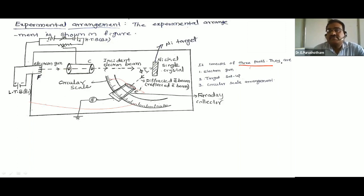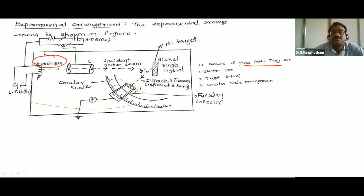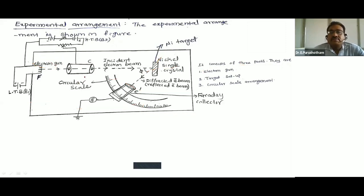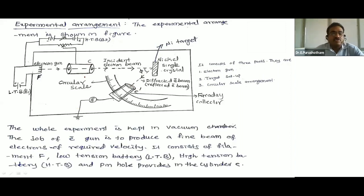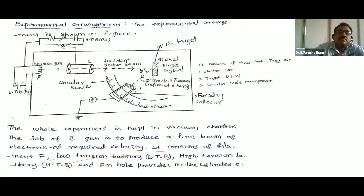The experiment consists of three main parts: number one, the electron gun; number two, the target — the nickel crystal; and number three, the circular scale arrangement. The job of the electron gun is to produce a fine beam of electrons of required velocity. It consists of filament F, a low tension battery, a high tension battery, and a pinhole cylinder C.